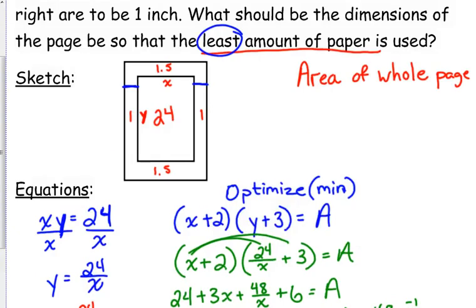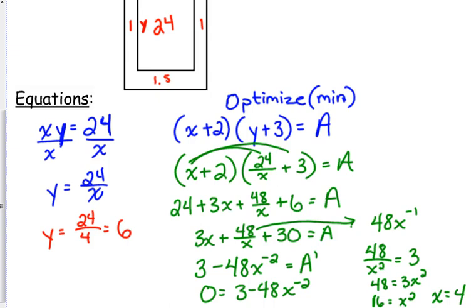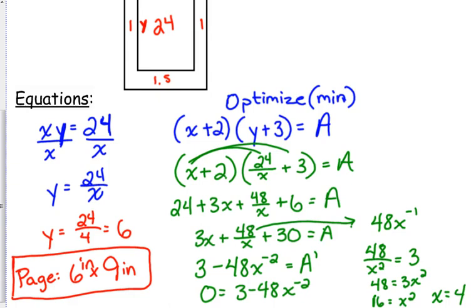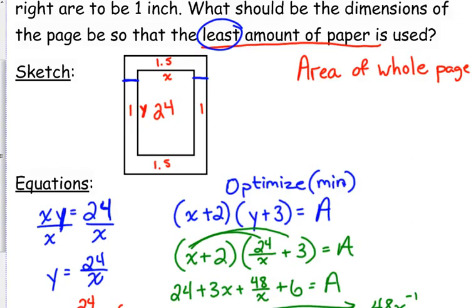So what it actually asks, the dimensions of the page. So that's not, it doesn't want the 4 and the 6. The page should be 6 by 9. Adding the 2 and the 3, the width and the height. So the dimensions of the page should be 6 by 9. That's going to give you the correct area and the minimum amount of paper. Because X and Y represented the width and height of the printed area. I wanted the dimensions of the page. So I had to go back in and add the margins.